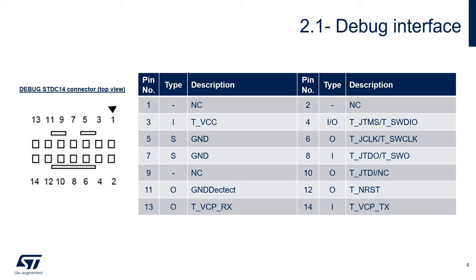Being a standard ST-Link debug probe, the ST-Link V3Power has a debug connector with the STDC14 connector to connect the SWD or JTAG interface of any STM32. It also provides two UART signals for the virtual COM port. The pinout for the debug connector is listed in this table — note that NC means not connected. The input reference voltage for debug interface level shifters must be connected to the target application on the VDDIO domain.